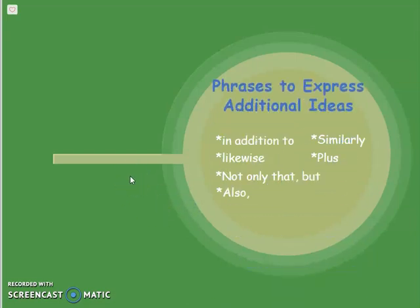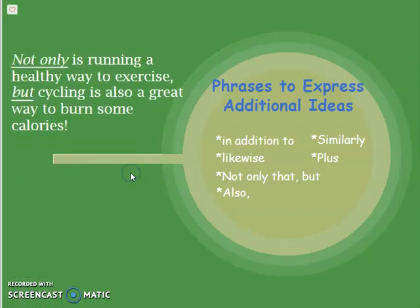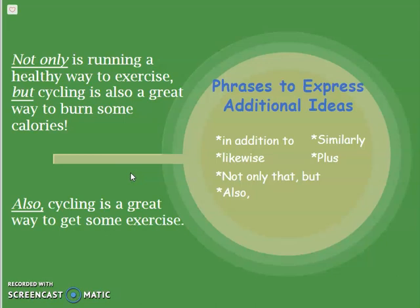Our last type for today: transitional phrases to express additional ideas. If you've given examples and want to give another one, you would use these phrases. You can use: 'in addition to,' 'similarly,' 'likewise,' 'plus,' 'not only...but,' and 'also.' For example: 'Not only is running a healthy way to exercise, but cycling is also a great way to burn some calories.' Also: 'Cycling is also a great way to get some exercise.'